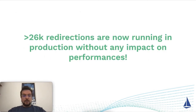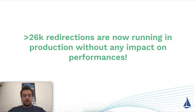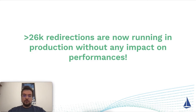Today at BlaBlaCar we have more than 26,000 redirections running in production without any impact on performance. Pushing so many redirections and configuration on your mesh can impact each Istio proxy and your control plane, but we have leveraged the use of Istio sidecars to limit the impact of the virtual services and only deploy the redirections on the namespace that handles the gateways.